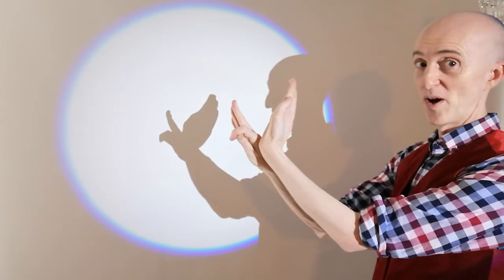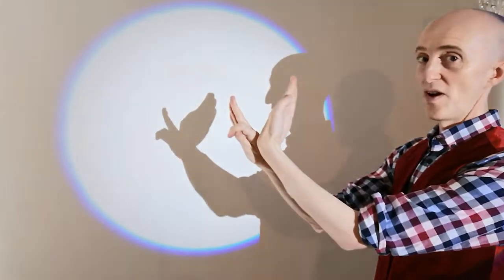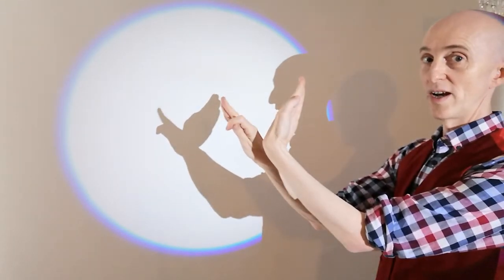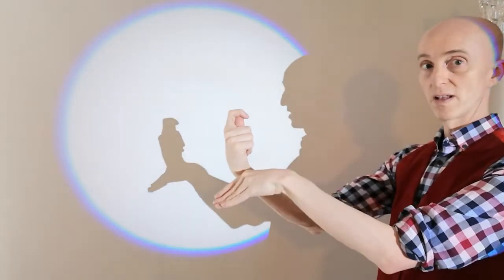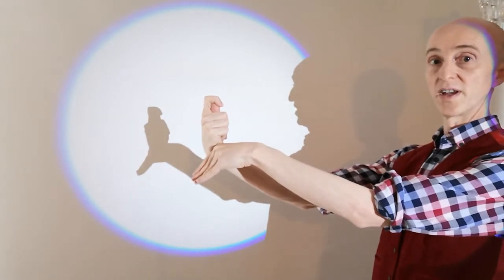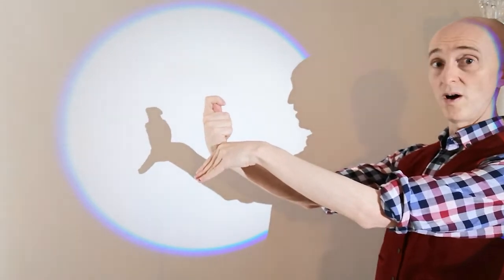Now the landing on the branch bit. So very quickly, you turn your right hand around and this hand goes like that, and there's your bird sitting on a branch.